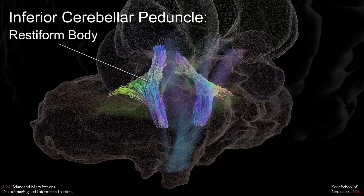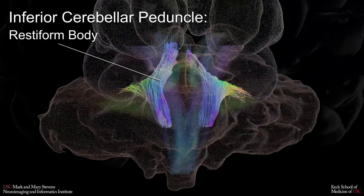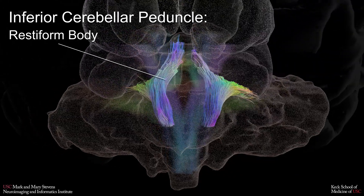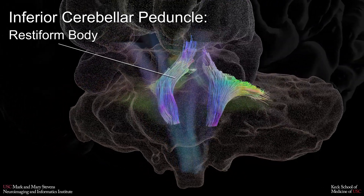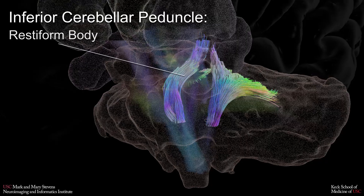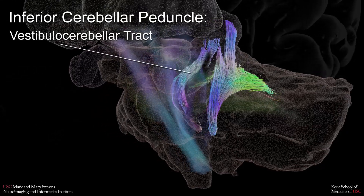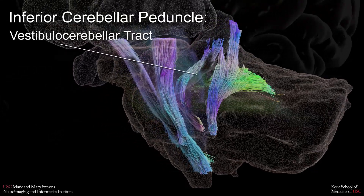The inferior cerebellar peduncle mainly consists of afferent tracts from the medulla oblongata to the cerebellum and the vestibulocerebellar tract.